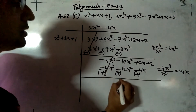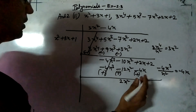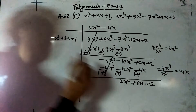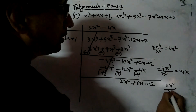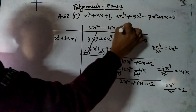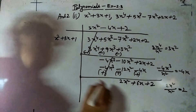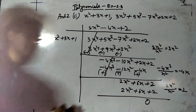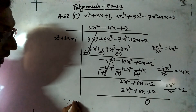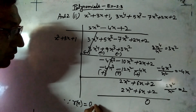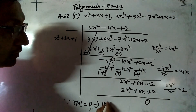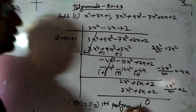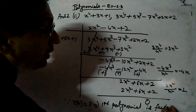Now we have 2x² + 6x + 2. Divide 2x² by x² to get 2. So the next term of the quotient is 2. Multiply 2 with all three terms: 2 × x² = 2x², 2 × 3x = 6x, 2 × 1 = 2. That gives 2x² + 6x + 2. After subtraction, we are getting 0. Since R(x) = 0, this implies that the first polynomial x² + 3x + 1 is a factor of the second polynomial.